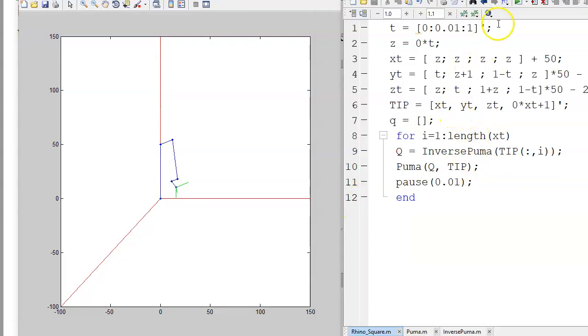Once you have the inverse kinematics, I can do the same thing we did back with the Rhino robot. Specify the tip position. Once I know the tip position, find the angles for the Puma robot, and then given the angles, draw the robot every 10 milliseconds, and it'll trace out a square. That's the inverse kinematics and forward kinematics of the Puma robot.